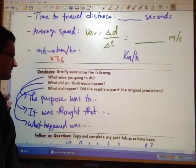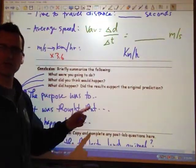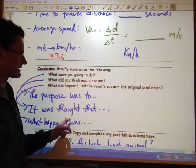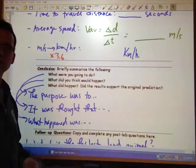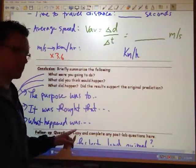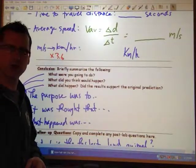When you're done that, the usual thing we have in a conclusion: What were you going to do? The purpose was to... so simply restate the purpose. What did you think would happen? It was thought that I would be able to run X kilometers per hour. And then what did happen? What happened was I actually ran Y kilometers per hour, whatever it happens to be.